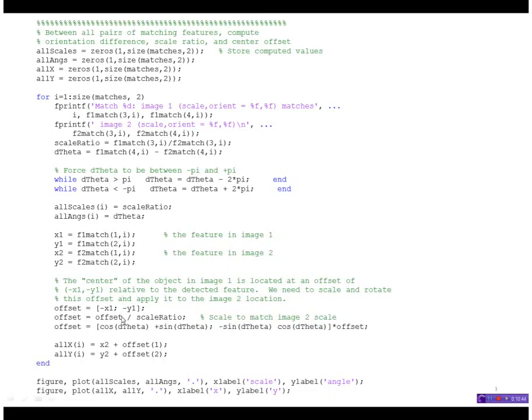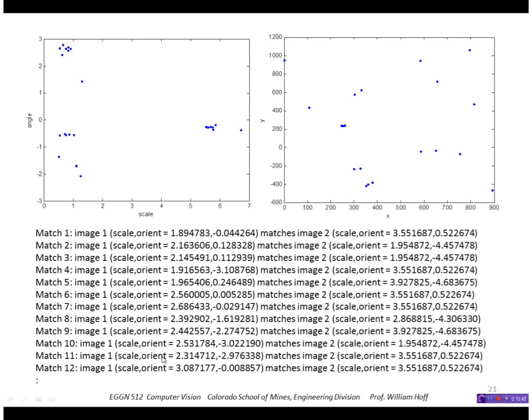And then finally we'll just plot that. This is what I get for that. This plots all those matches in terms of their scale ratio and angle difference and the x and y location in the image. So we see clusters here of points - these are matches that have a similar angle change and scale change or a similar location in the image, and I just printed out some of them here.